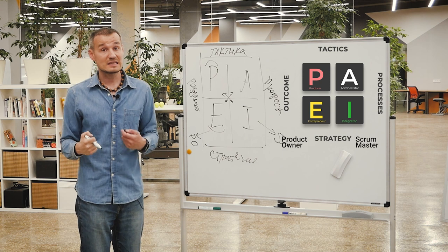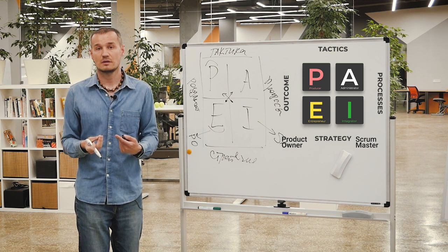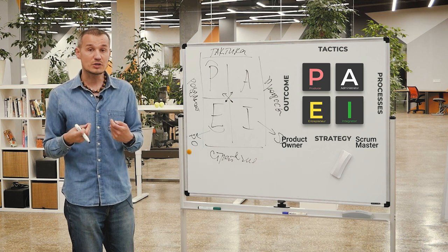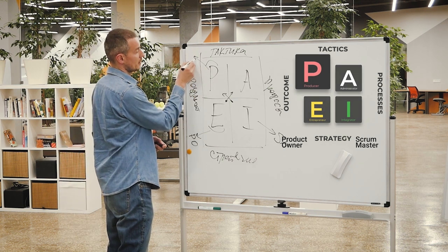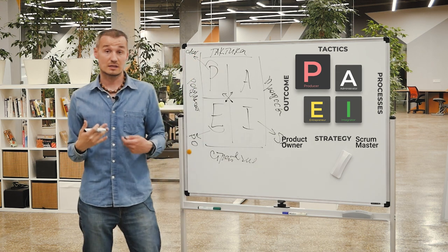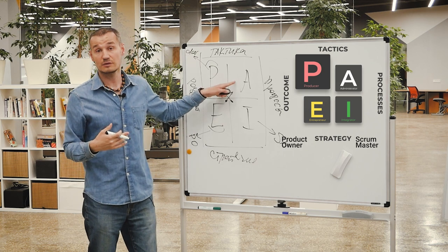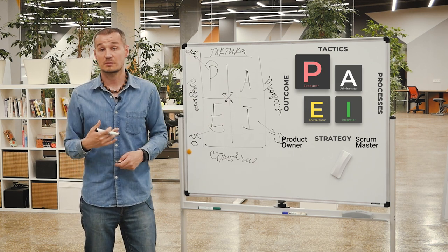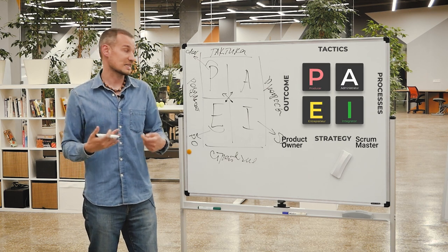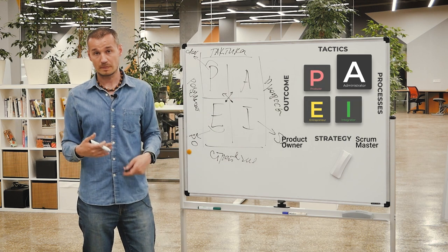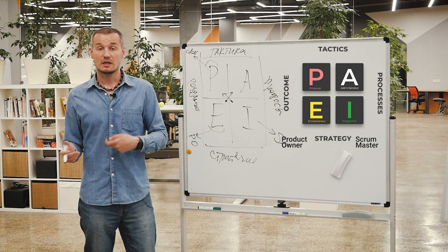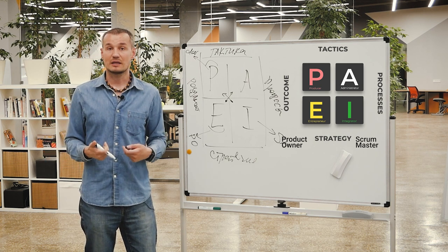Developers are usually the ones focused on the process itself. Their overall main profile is usually P — the Producer. In this picture, we have one single function left untouched according to the Scrum Guide: the A function. An Administrator is the one who has the A function more developed than others. Therefore, we can combine the roles of a Scrum Master and an Administrator, or someone else from the team and an Administrator.